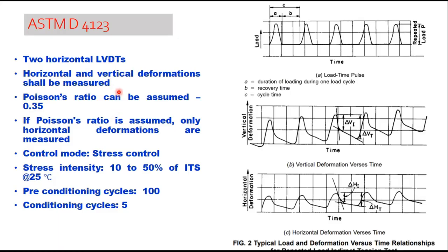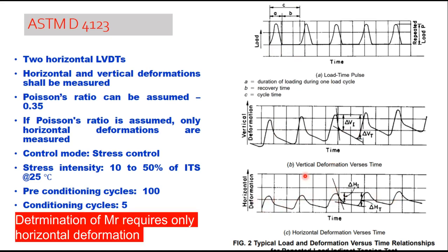The method given in ASTM D4123 tests a Marshall specimen. The loading cycle duration is 0.1 second and the recovery period is 0.9 second, making A plus B the total cycle time. Both vertical and horizontal deformations are obtained from the specimen, and you can measure both if you want to determine the Poisson ratio.